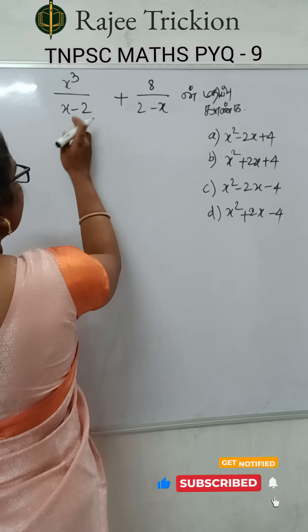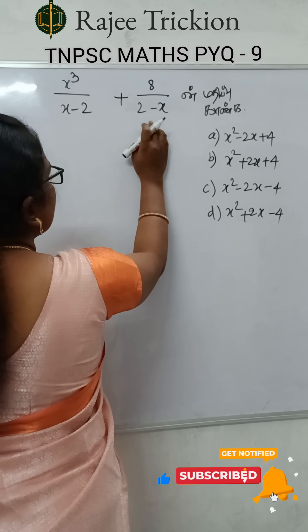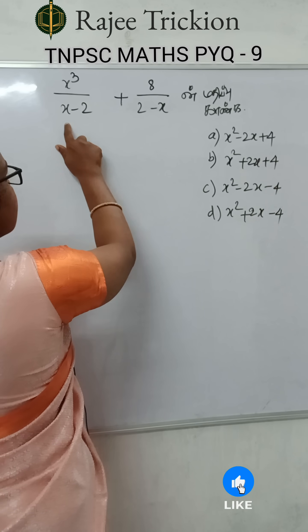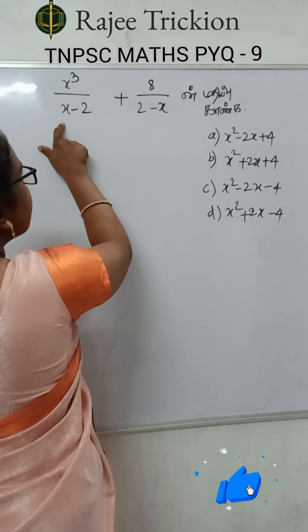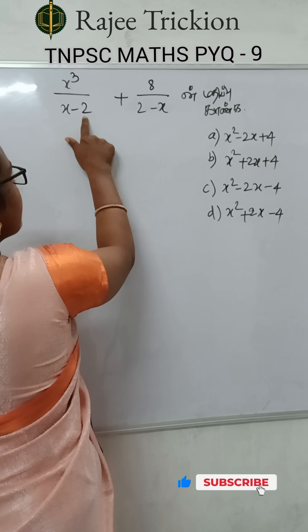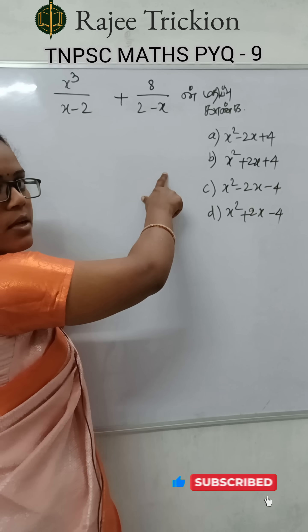x³ divided by x minus 2, plus 8 divided by 2 minus x. So in the denominator, we have x minus 2 and 2 minus x.